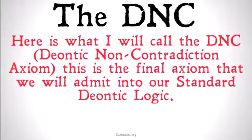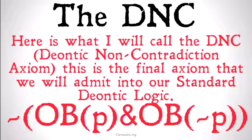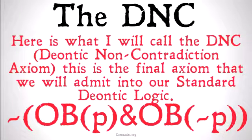This is the final axiom we're going to admit into our standard Deontic Logic. It states: it's not the case that it's obligatory that P and it's obligatory that not-P. This makes sense — it shouldn't be the case that we have to do a contradiction, that we have to do P and also not-P. There are some important differences between this and the omissibility of contradictions axiom that we'll talk about in a couple of videos later.